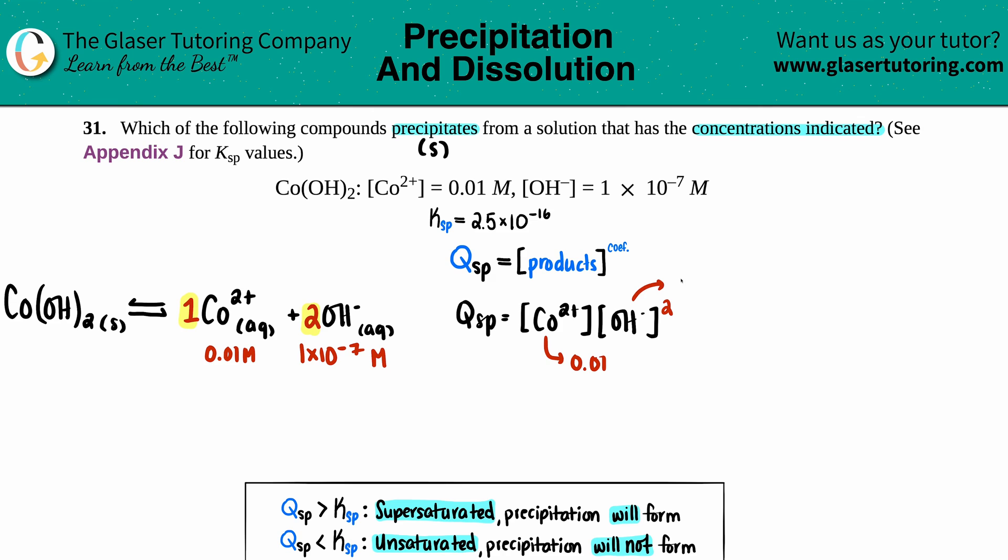The hydroxide was 1×10^-7. Let's plug those values in. Qsp equals 0.01 times 1×10^-7, and that one has to be squared. I'm going to plug this into the calculator in one shot.